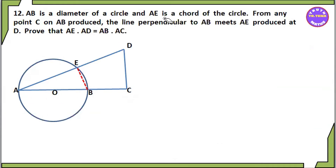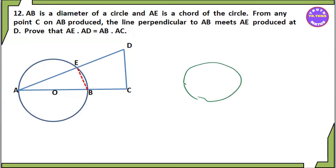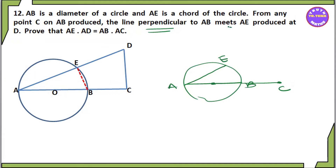Diameter of circle N. AB is a diameter, and AE is a chord. We need to find the relationship when AE is produced to meet the tangent at B, giving point D. The line perpendicular to AB meets AE produced at D.